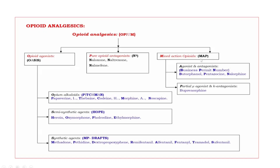Next, last one — mixed actions of opiates. These are further subdivided into two groups using the mnemonic MAP. M means mixed actions. A means agonist and antagonist. P means partial mu agonist and kappa antagonist. For agonist and antagonist, the mnemonic is BPN — business permit number. B — butorphanol. P — pentazocine. N — nalorphine.